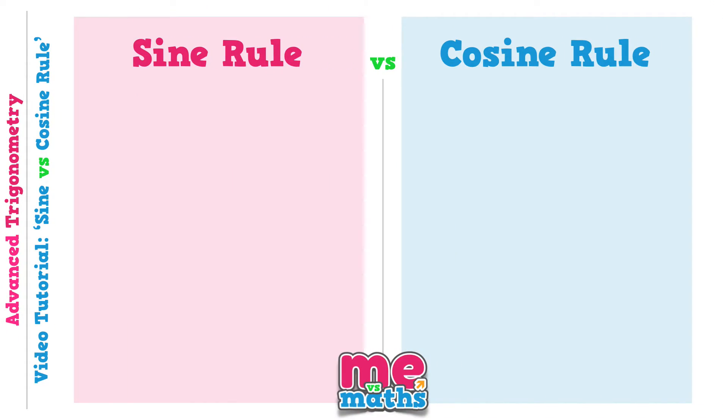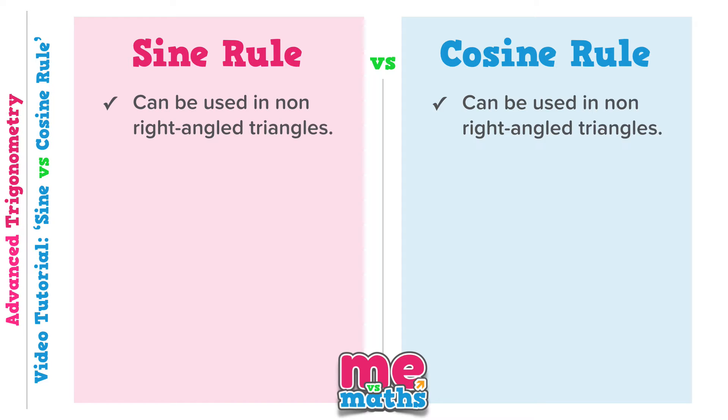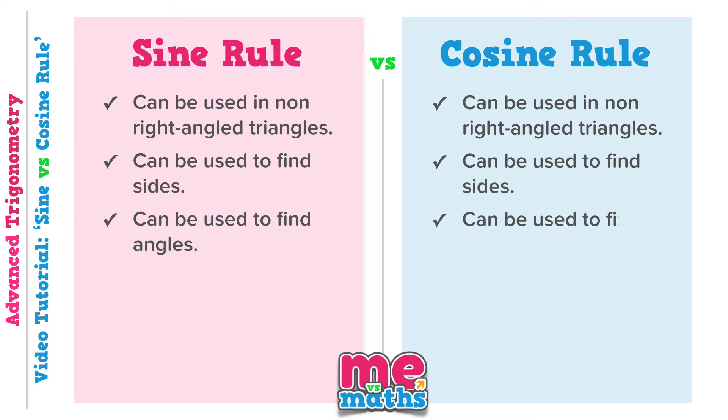If we make a quick comparison between the two, we can see just how similar they are, and hence why it can be so confusing knowing which to use. Both can be used in non-right angle triangles. Both can be used to find sides, just as both can be used to find angles. We don't seem to be getting so far to see how they are actually any different from each other, so let's try looking at the formulas that we use for the two rules.